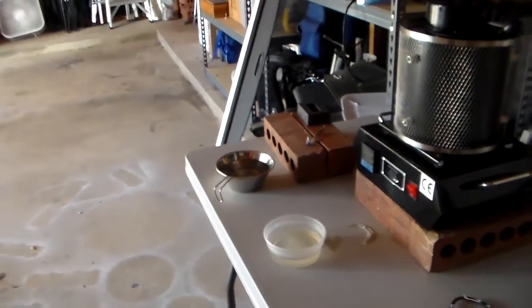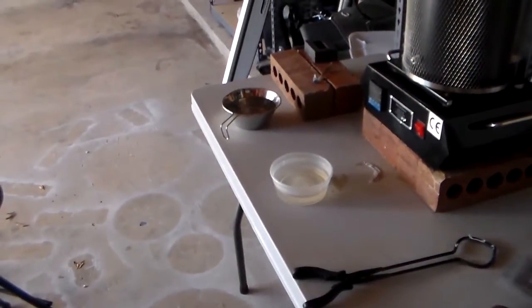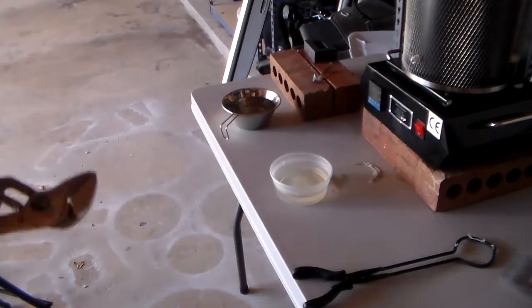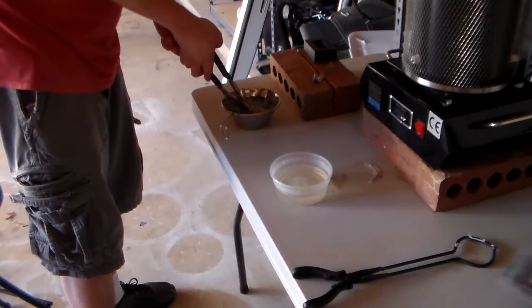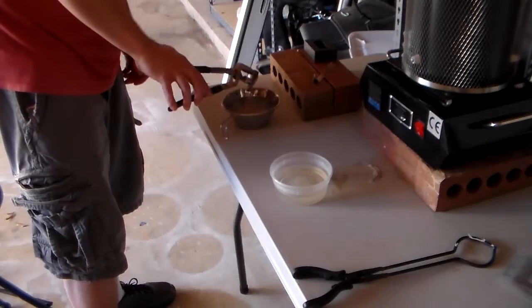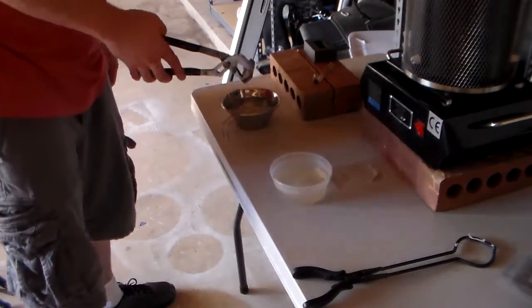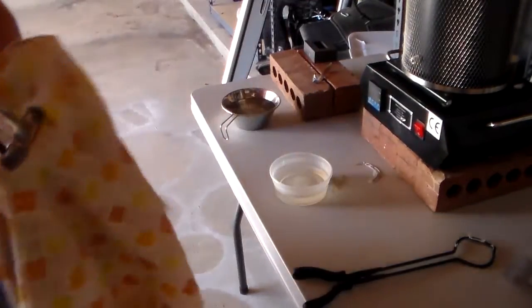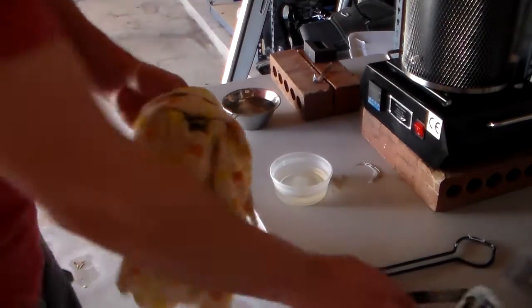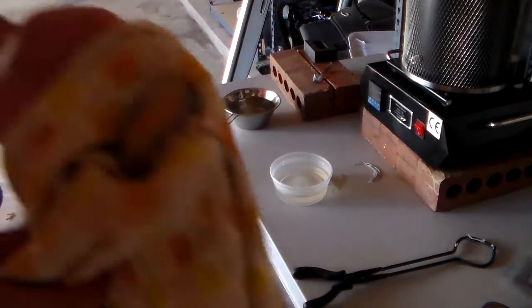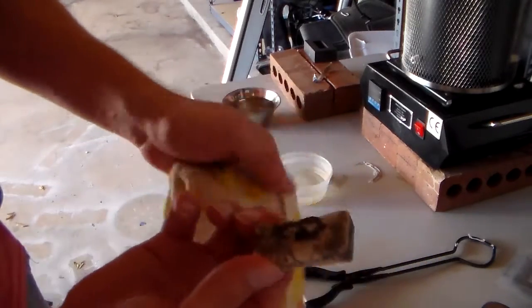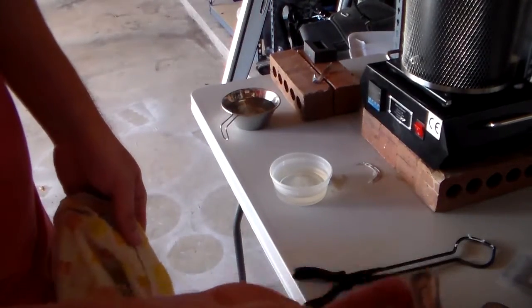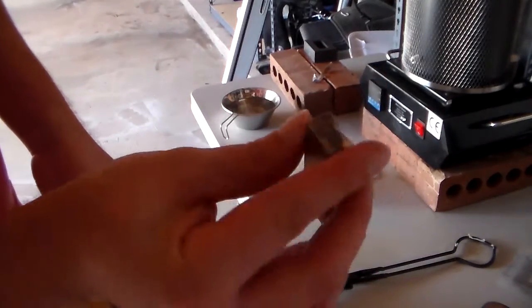Alright, so we went ahead and cooled that down. We're going to go ahead and pull it out and we're going to use a little vinegar and salt pickle. So there's the silver bar. It's pretty dirty. I don't know if you can see that. Pretty dirty. So I'm going to go ahead and pickle it.